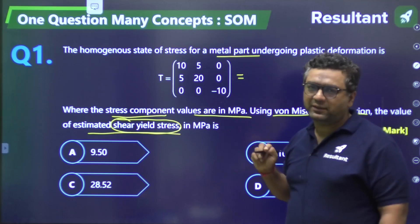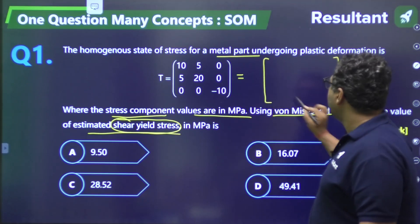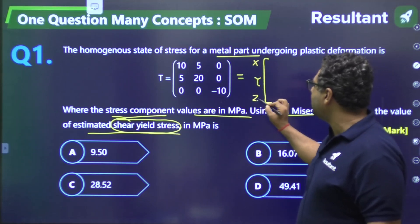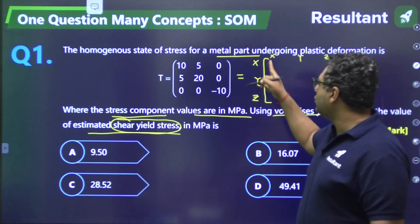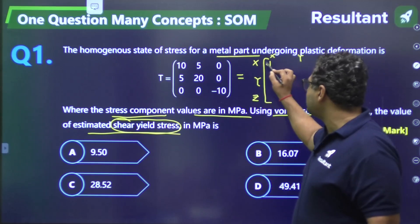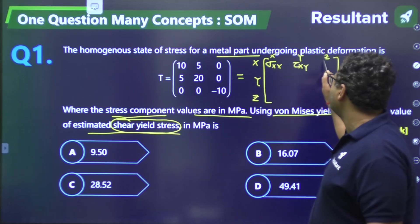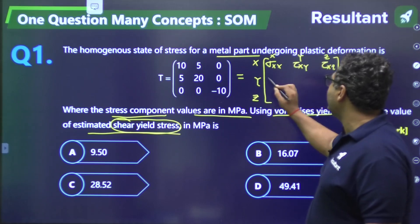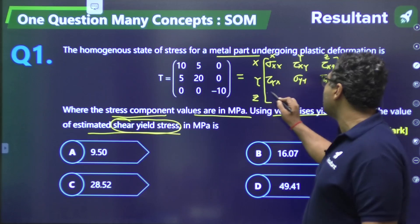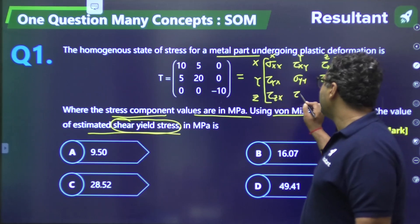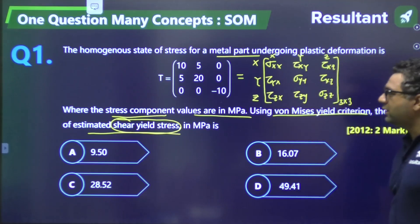First, you should know how a stress tensor is represented. We write rows for x, y, z and columns for x, y, z. When row and column are the same, we write normal stress sigma_xx. When they are different, we write shear stress tau_xy, tau_xz, tau_yx, sigma_yy, tau_yz, tau_zx, tau_zy, and sigma_zz — this is a 3×3 matrix.